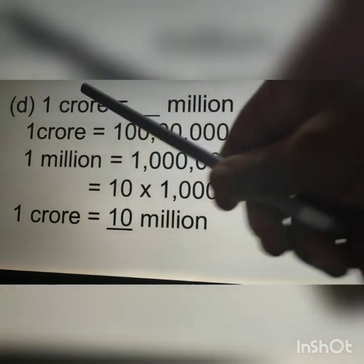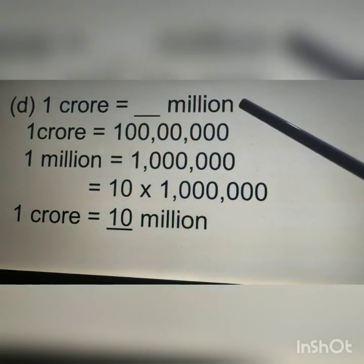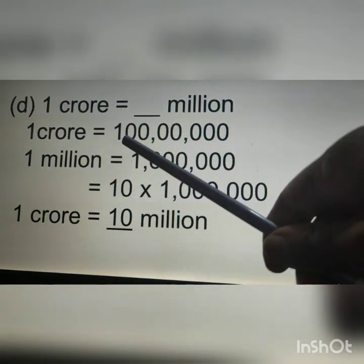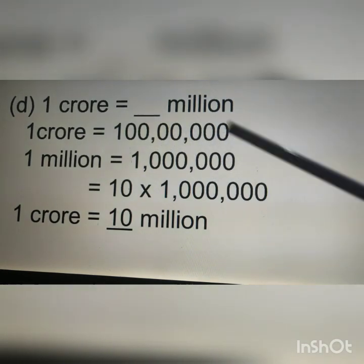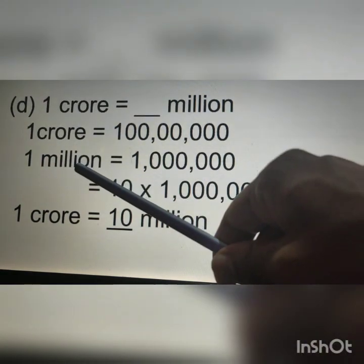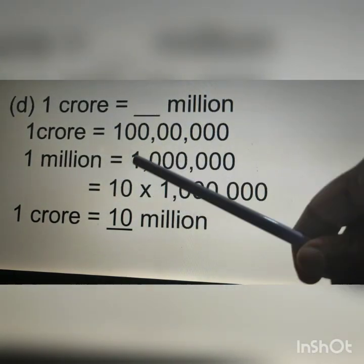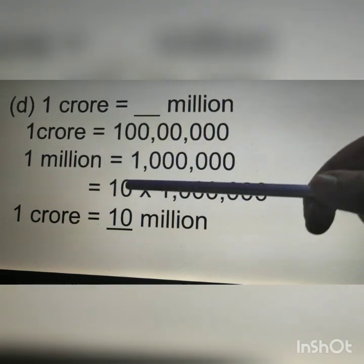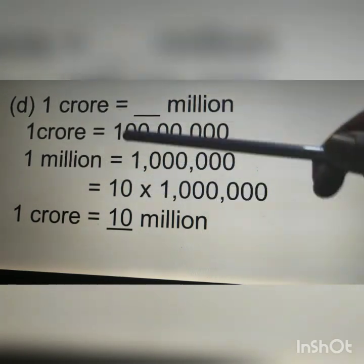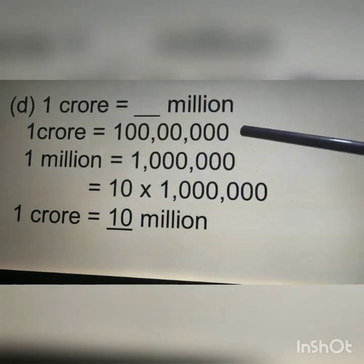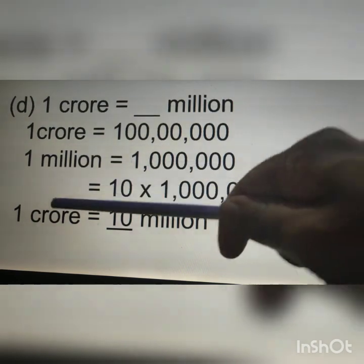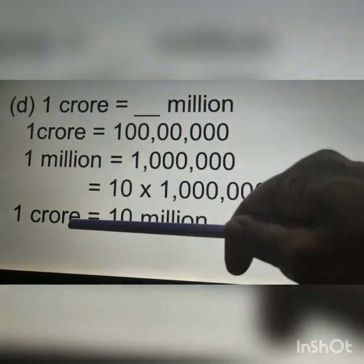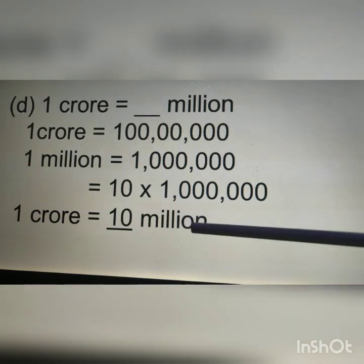Next question: 1 crore is equal to how many million? We know in 1 crore after 1 there are 7 zeros, and in 1,000,000 there are 6 zeros after 1. So if we multiply 1,000,000 with 10 we will get 1 followed by 7 zeros, which is equal to 1 crore. So we can write 1 crore is equal to 10 million.